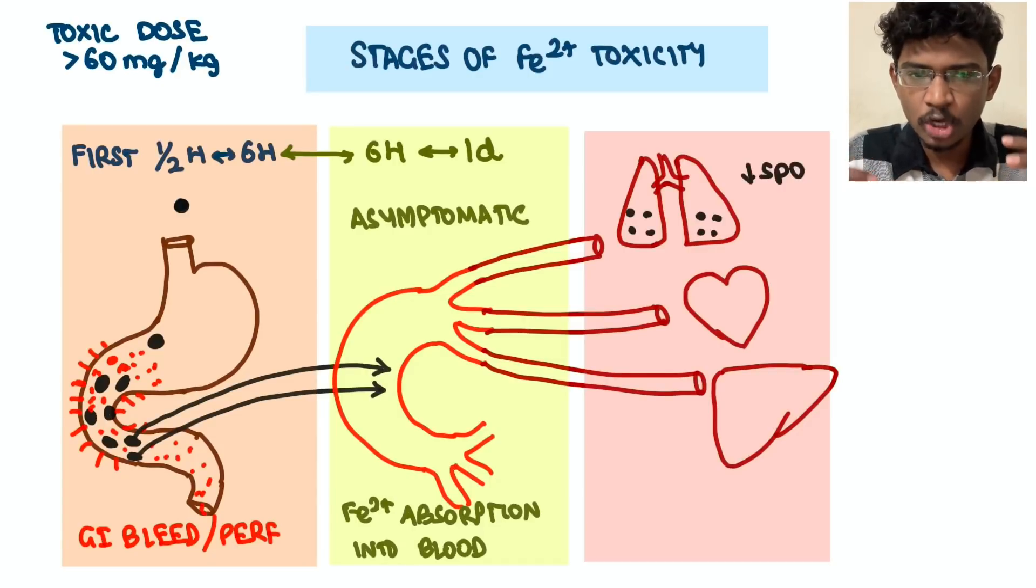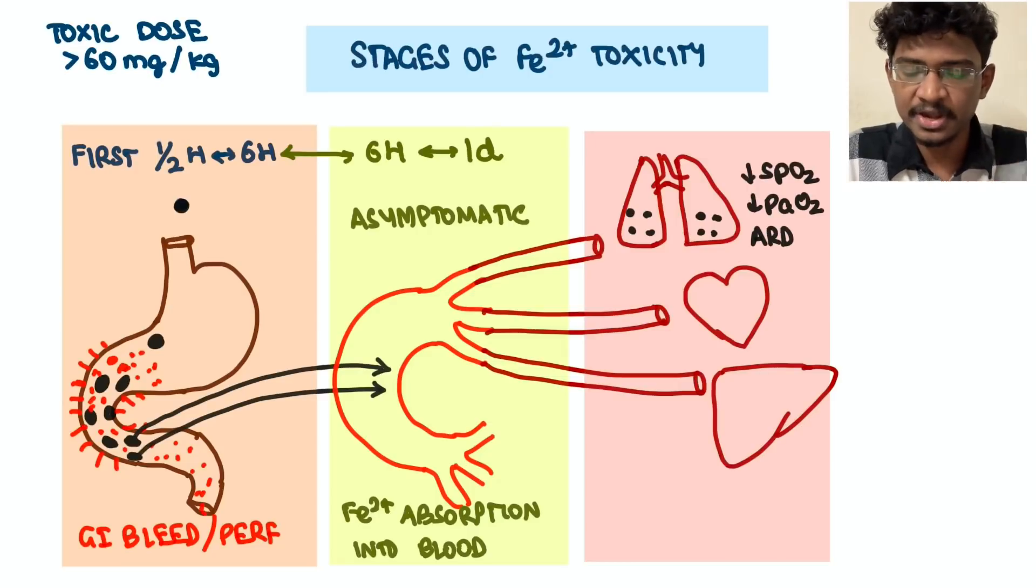What happens next is whatever iron which has been absorbed into circulation gets distributed into various kinds of tissues. Here comes the deadly phase. Also high anion gap metabolic acidosis due to iron toxicity.